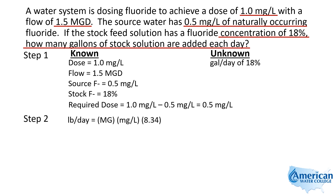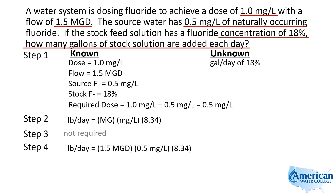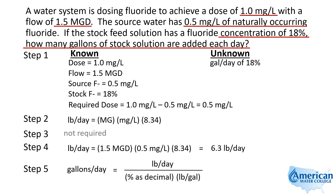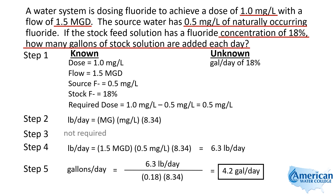Step two: use the pounds per day formula. Flow is 1.5 MGD; additional fluoride added is 0.5 mg/L; multiplied by 8.34 gives 6.3 pounds per day. Step five: convert pounds per day to gallons per day using gallons per day equals pounds per day divided by percent strength divided by pounds per gallon of the liquid solution. Since no weight was given, we use 8.34. Plugging in: 6.3 ÷ 0.18 ÷ 8.34 = 4.2 gallons per day.